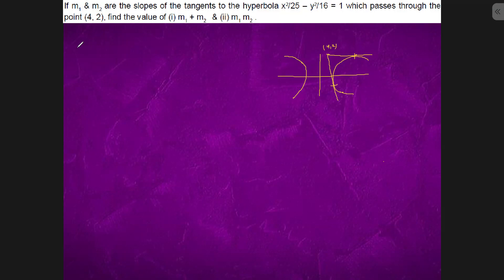The slopes are m₁ and m₂. So equation of tangent is y equals mx plus minus root under a square m square minus b square, which is passing through